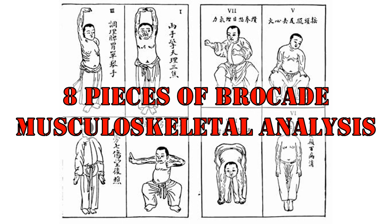So now let's look at the next movement in the eight pieces of brocade set of qigong exercises. This movement is commonly referred to as separate heaven and earth. And you can see from the movement, you're pressing up with one arm and pressing down with the other.